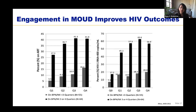This graph represents a multi-center study of 10 sites providing combined HIV and buprenorphine treatment for patients with HIV and opioid use disorder. Comparing people treated with buprenorphine for less than three quarters of the year versus three or four quarters: of subjects not on ART at baseline, patients prescribed buprenorphine for three or more quarters were significantly more likely to initiate ART and significantly more likely to achieve HIV viral suppression.